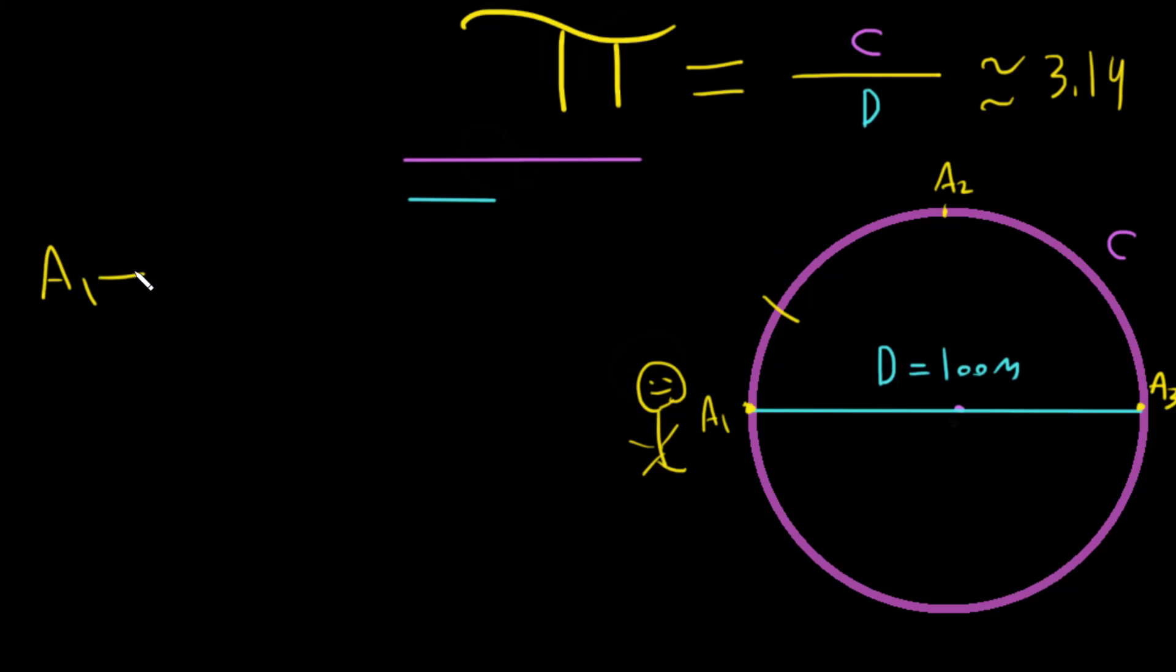If you want to go A1 to A3, D equals 100 meters. For the second way, A1 to A2 to A3, you have to use this rule.